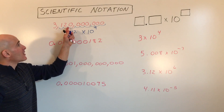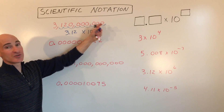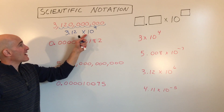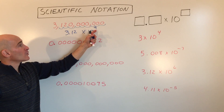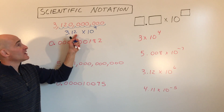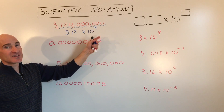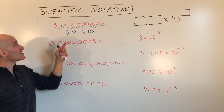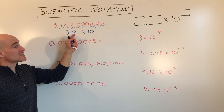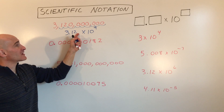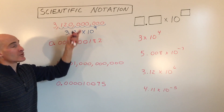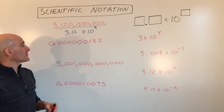You can see we dropped all of those zeros — they are not significant digits. And we have 10 to the ninth power, which means it's like multiplying 3.12 times 10, times 10, times 10 — nine times. It moves that decimal point one place to the right each time, making the number larger and larger until you get back to the original number: 3,120,000,000.